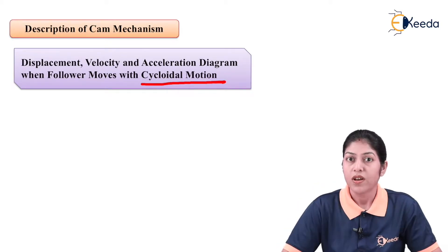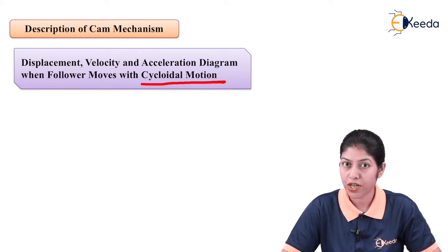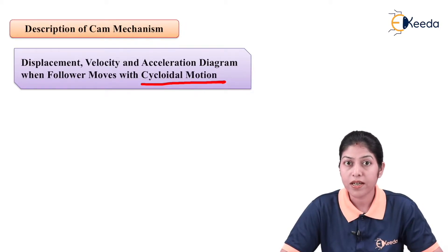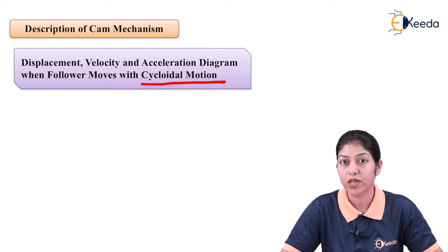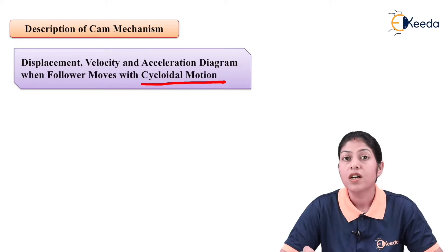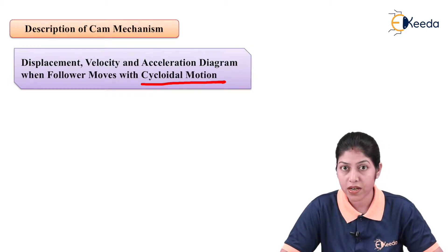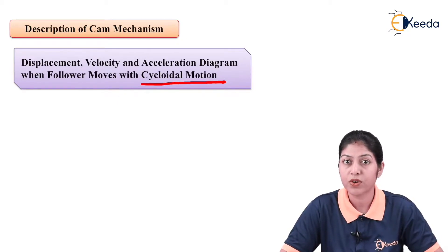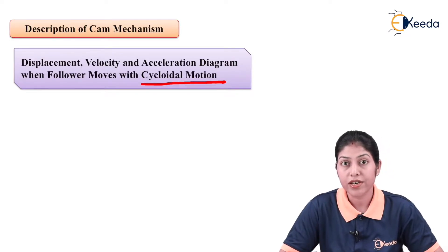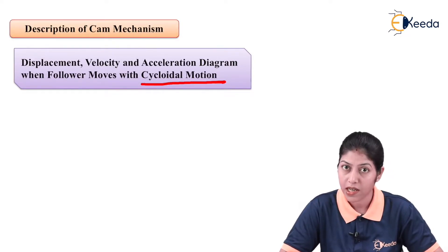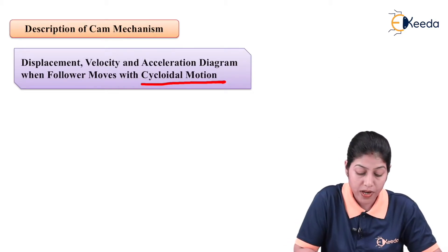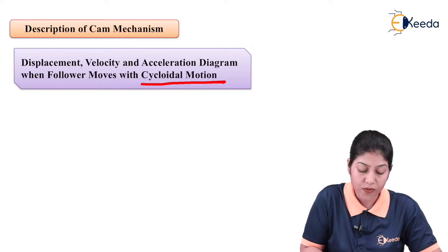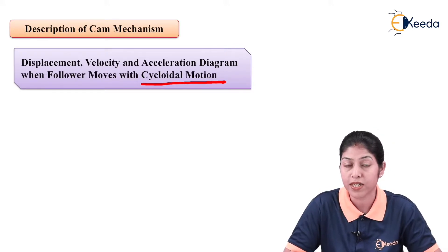Cycloidal motion can be defined as the motion when any point on a circle draws a particular curve when that circle is rolling over a straight line. The curve drawn by a fixed point on a circle when the circle is rolling on a straight line is called a cycloid. This is the simple description of cycloidal motion.